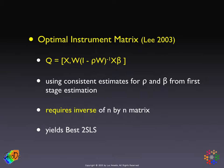In search of more efficient estimators, there are two papers in particular that explore this notion of optimal instruments and best two-stage least squares. They all go back to the original expression used for the reduced form, where the conditional expectation for the spatially lag-dependent variable given x was W times (I minus ρW) inverse Xβ.